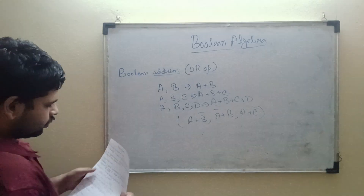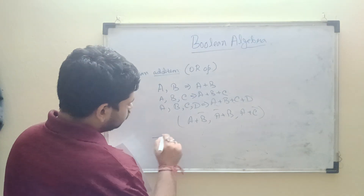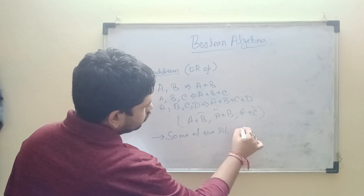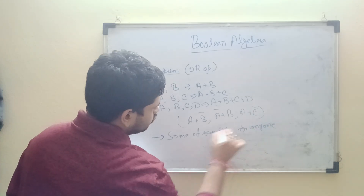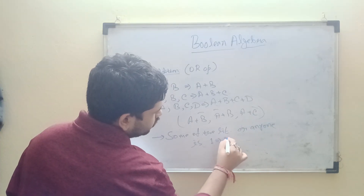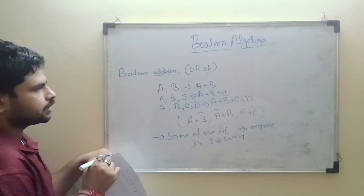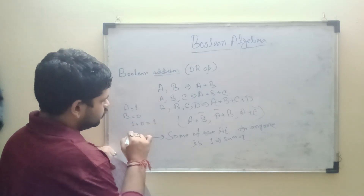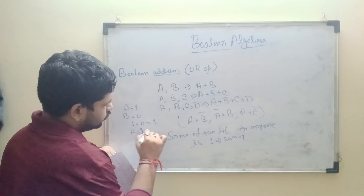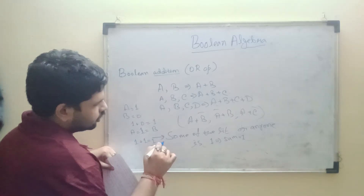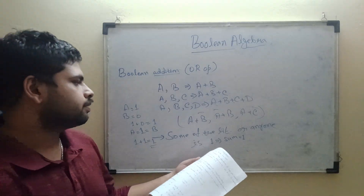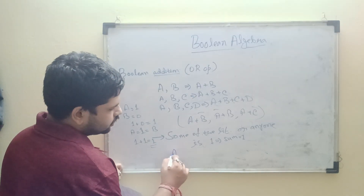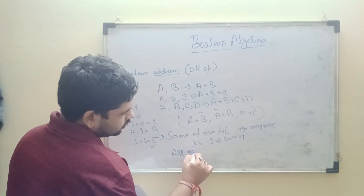Boolean addition has two key properties. First, if any one of the variables or literals is 1, then the sum will be 1 — for example, 1 + 0 = 1 and 1 + 1 = 1. Second, if all the literals are 0, then the sum will be 0.